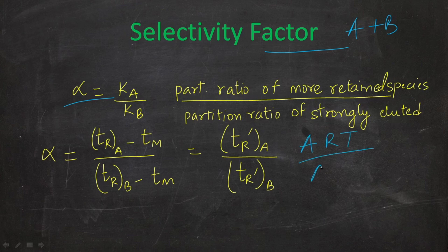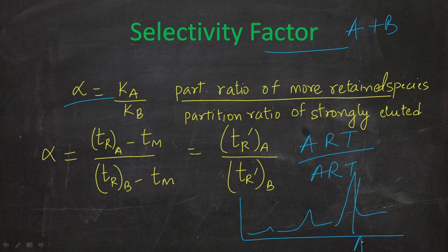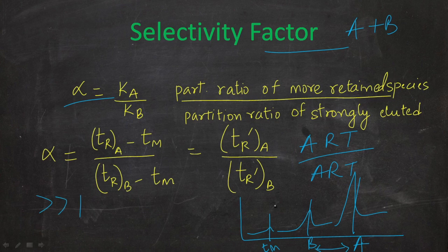For example, in a chromatogram we have the dead time tm, then one peak for B and another peak for A. The selectivity factor should be greater than one — only then will the peaks be well separated and we will get good separation.